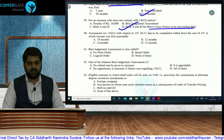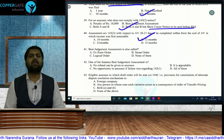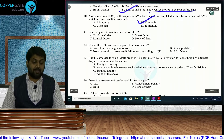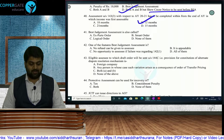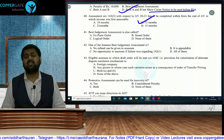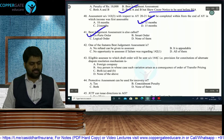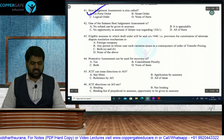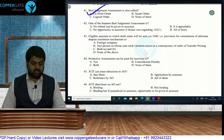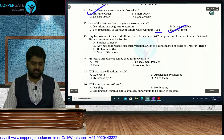Assessment under Section 143(3) for AY 2021 must be completed within 12 months from the end of the AY — transfer pricing would add 12 months extra making it 24, but that is not mentioned. Best judgment assessment under Section 144 is also called an 'exparte order.' Features: no refund can be given, it is appealable at CIT Appeals, and no opportunity is given if the failure was regarding Section 142(1). Answer: all of the above.